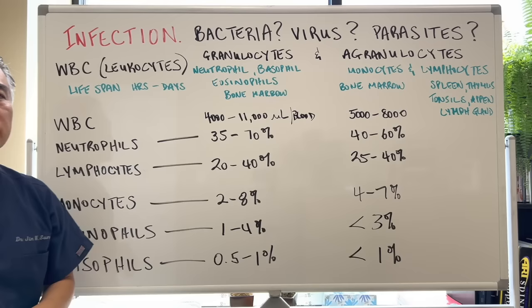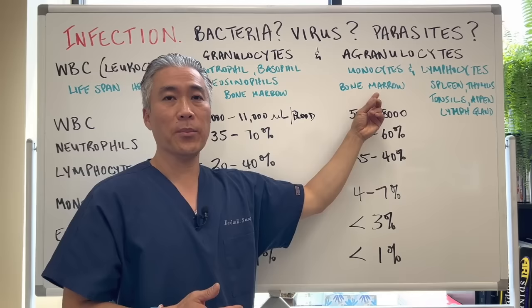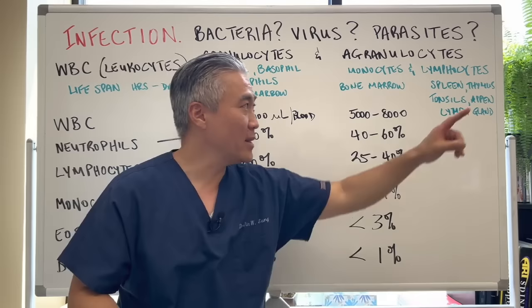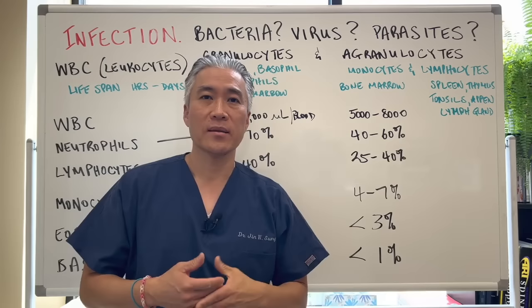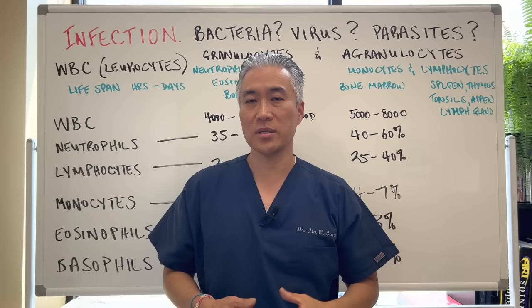Granulocytes are neutrophils, basophils, and eosinophils, which are produced in the bone marrow. Agranulocytes are monocytes and lymphocytes — monocytes are produced in the bone marrow, while lymphocytes are produced in the spleen, thymus, tonsils, appendix, and lymph glands. You need all the organs you are born with, so don't randomly remove your tonsils or appendix if you can keep them — they're part of the immune system.